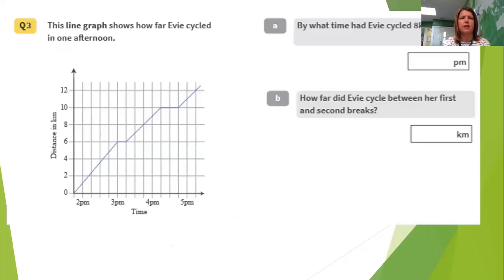The line graph shows how far Evie cycled in one afternoon. So we can see that she started at zero here and she cycled here. By what time had Evie cycled eight kilometres? So if I look at eight kilometres, if you've got a printed version of this, it's a good idea to draw a line.